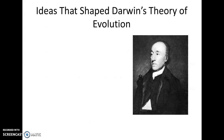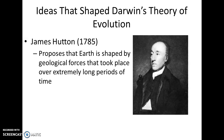Now that we've had a chance to go through those, we're going to look at some of the early scientists that shaped Darwin's theory of evolution. The first one is James Hutton. James Hutton has the nickname of the Father of Modern Geology, because he was one of the first people to establish geology as a credible science. One of his first ideas was that Earth is shaped by geological forces that take place over extremely long periods of time.